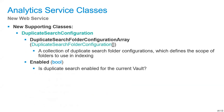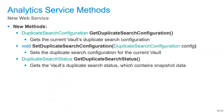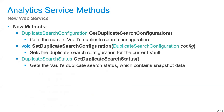A few new methods support the Analytics service: Get Duplicate Search Configuration returns that configuration, and we can also set it with a new config. To get the search status — which contains the snapshot data — we can call Get Duplicate Search Status.